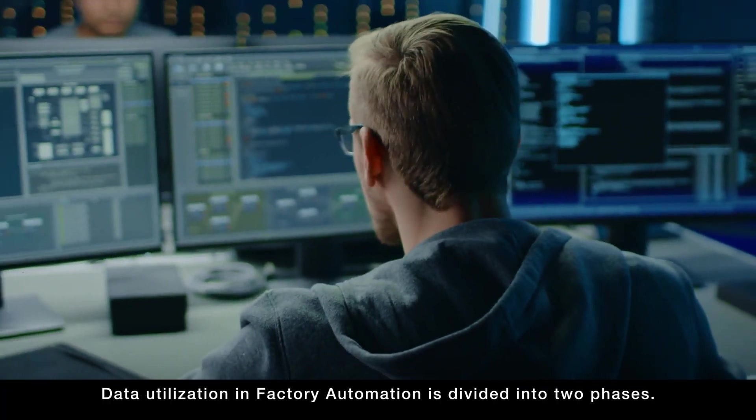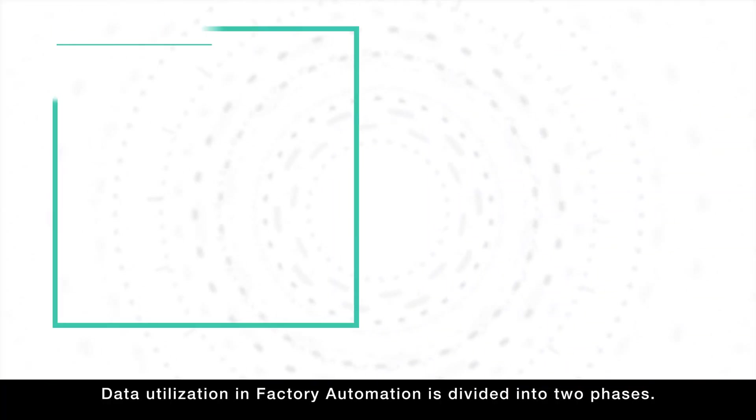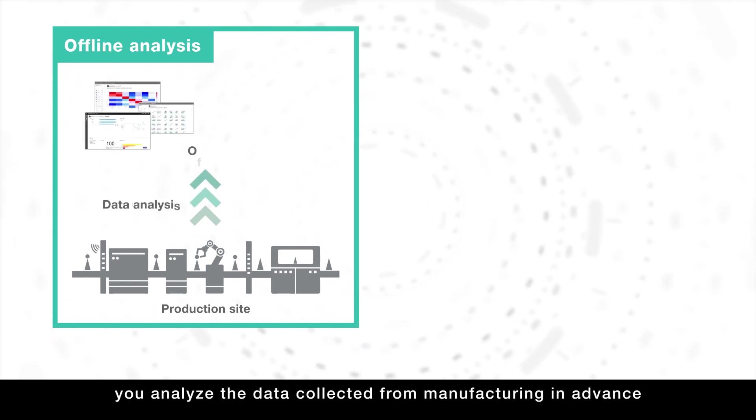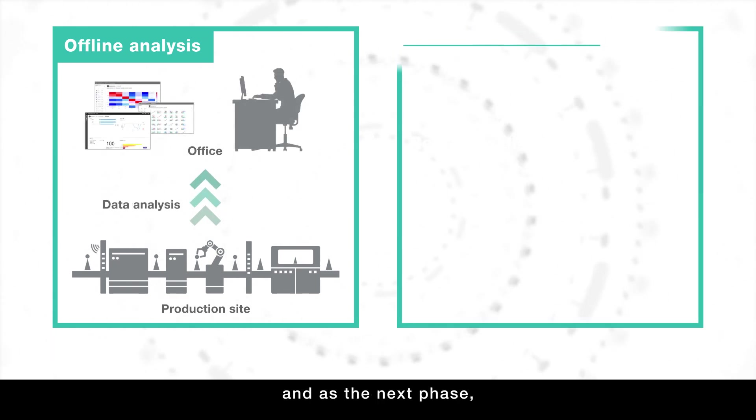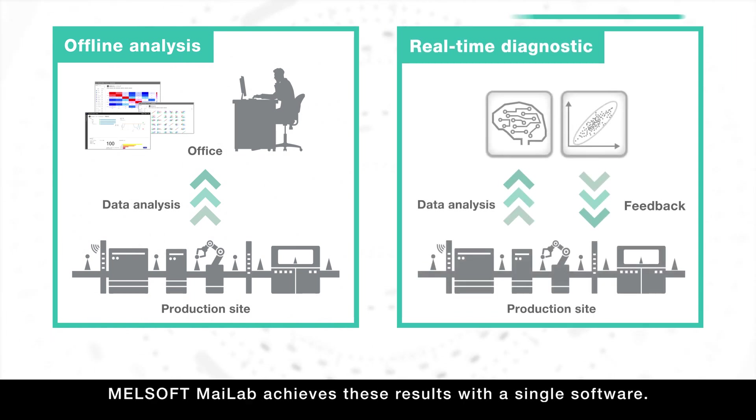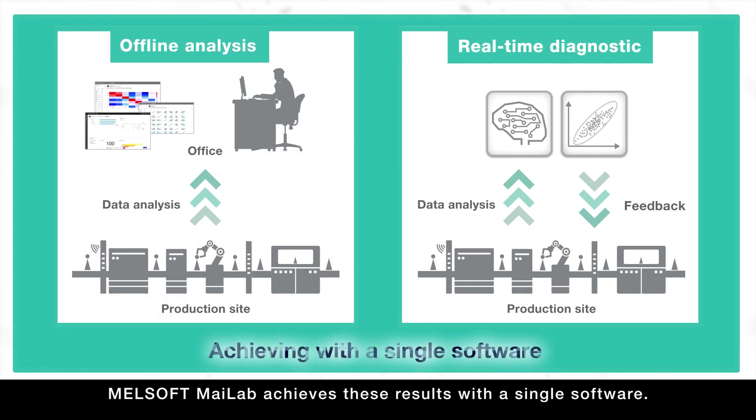Data utilization in factory automation is divided into two phases. In the first phase, you analyze the data collected from manufacturing in advance. And as the next phase, you start diagnostics at the production site based on the analysis results. MelSoft MyLab achieves these results with a single software.